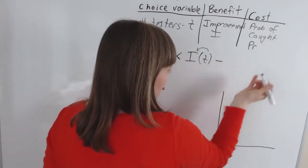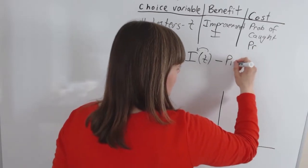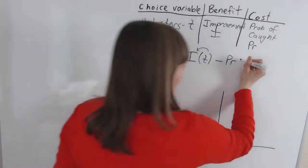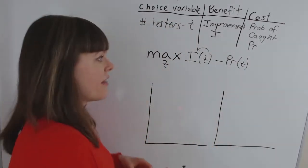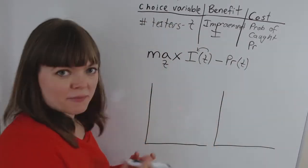It's benefit minus cost. So the cost is the probability of getting caught. And that is a function of how many people we tested on. The more people we tested on the higher the chances that we're going to be caught by Umbridge.